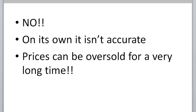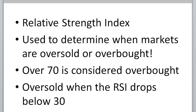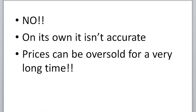So does it work? Can you just go ahead and buy whenever the RSI drops below 30, and short whenever it goes above 70? The short answer is no, you just can't. On its own, it's not very accurate — sometimes it works, sometimes it doesn't. If you have a range market it could work, but generally speaking, prices can be oversold for a very long time. Just because the index tells you something's oversold or overbought doesn't mean you're going to see a quick retracement. Prices can continue to be oversold for a long time.